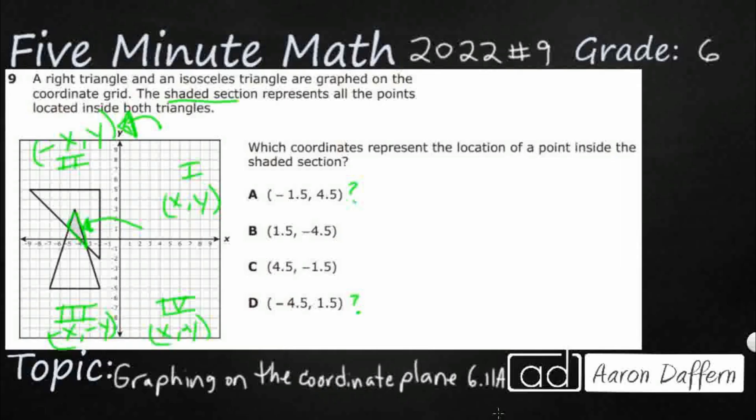So let's start with A and D here. So we've got an x of negative 1.5. So there's my negative 1. So my negative 1.5 is going to be right around there. And then 4.5 is right around there. So it's not even inside any of the triangles. All right, so I'm just going to kind of draw a little arrow.